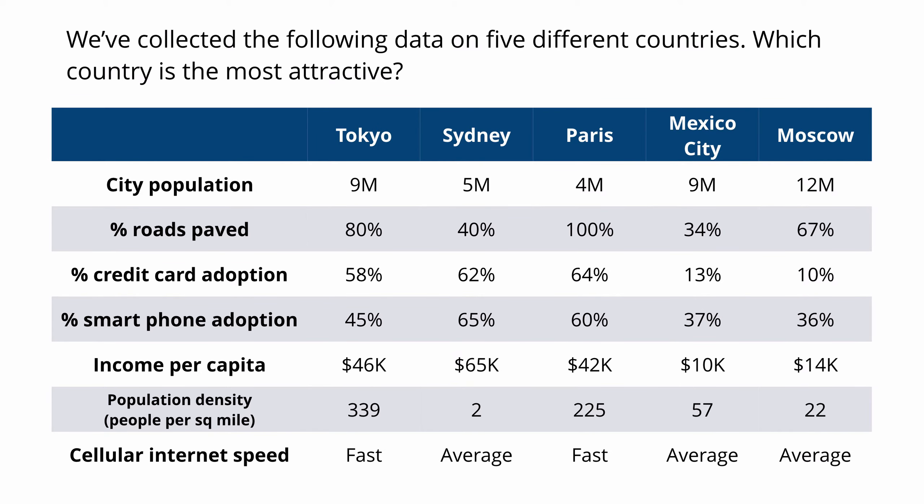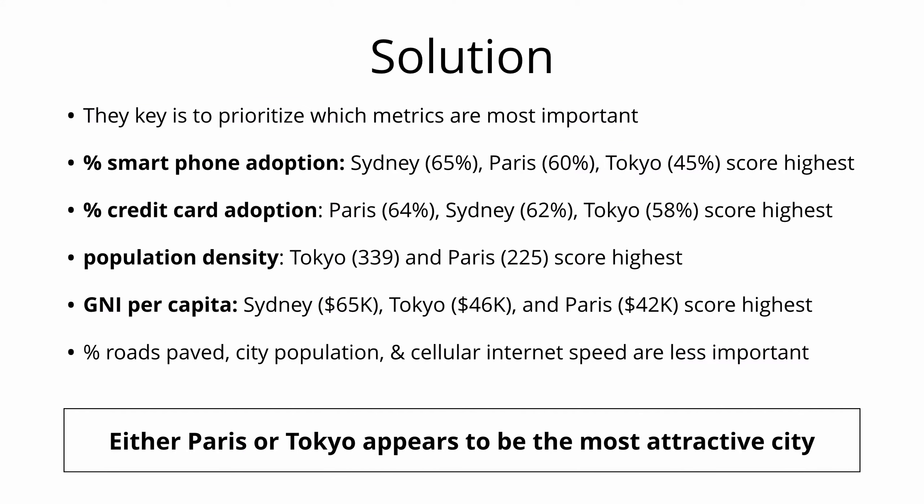We've collected data on five different countries. Which country is the most attractive? Pause the video now to answer this question. There is a lot of data provided, and the key is to prioritize which metrics matter most. Smartphone adoption and credit card adoption are highly important because our business is based on customers using an app on smartphones. Population density is important because it makes coordinating rides more feasible. Gross net income per capita reflects whether customers can afford the service. Based on these metrics, Paris and Tokyo perform highly on all of these, making them the most attractive cities.